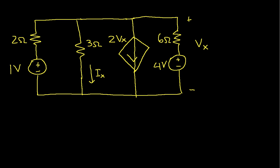We'll bring up a clean copy of the circuit. We will find the response due to the 1 volt source, so this will be Ix prime and this will be Vx prime. One thing that sometimes isn't clear: when we're solving due to one source and we have a dependent source, the dependent source is dependent on the voltage in this circuit alone. We also have to get rid of the 4 volt source and replace it with just a short circuit. So now we have the circuit we need to solve.